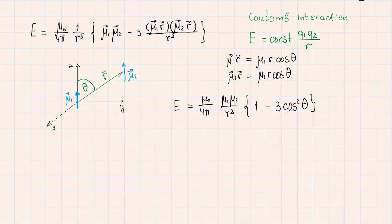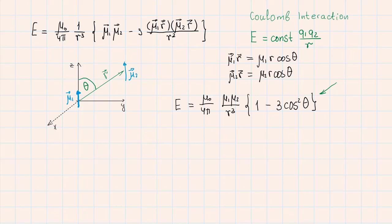With this we obtain the simplified energy expression. Here we see that the energy is proportional to the magnetic moment magnitudes mu1 and mu2, is inversely proportional to r to the power of 3, and it also determined by the angle theta via this function 1 minus 3 cosine square theta. Let us remember this expression.